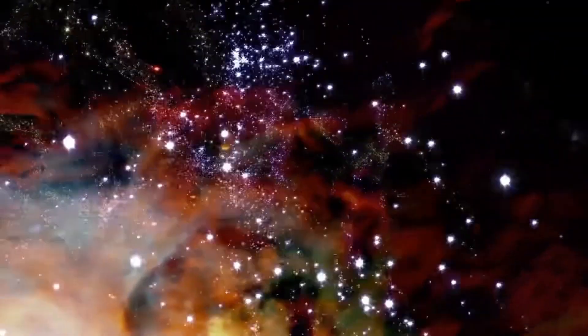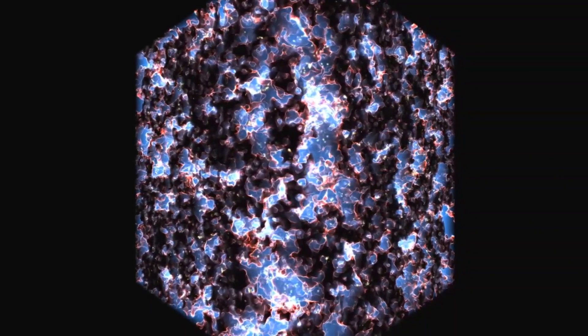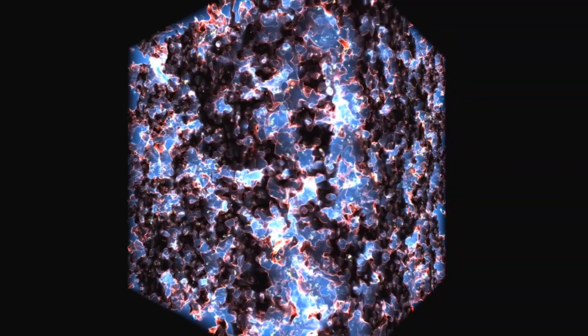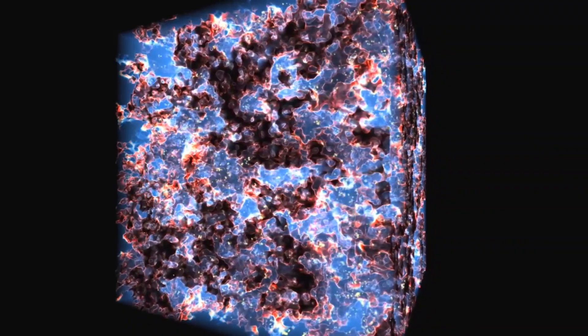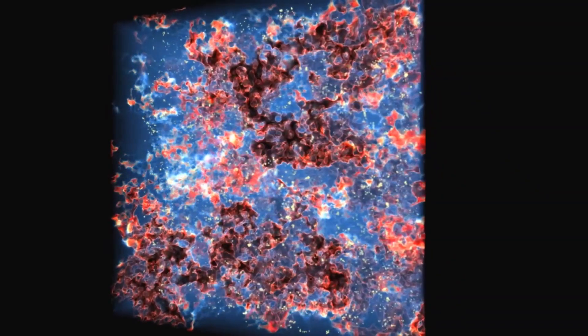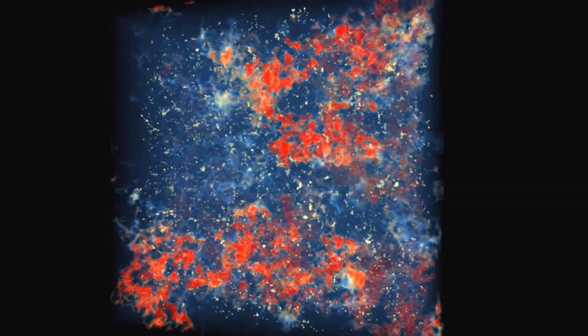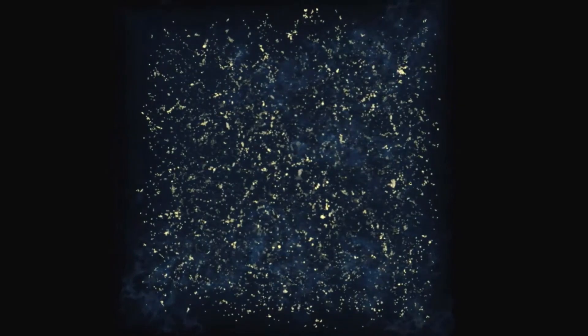Using James Webb, astronomers discovered that approximately 900 million years after the Big Bang, existing galaxies ionized the surrounding gas, rendering it transparent. Bubbles of ionized gas around these galaxies grew and merged, gradually transforming the universe into the transparent state we observe today.